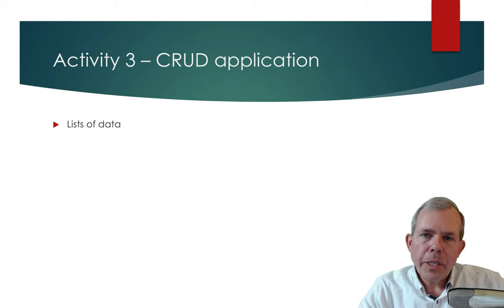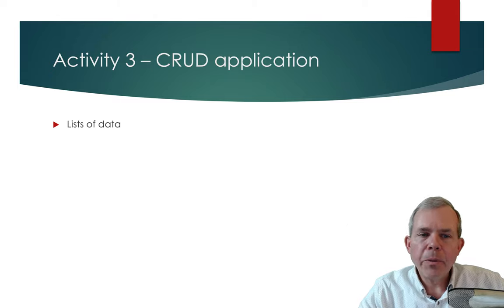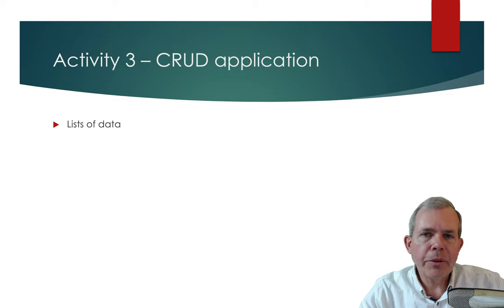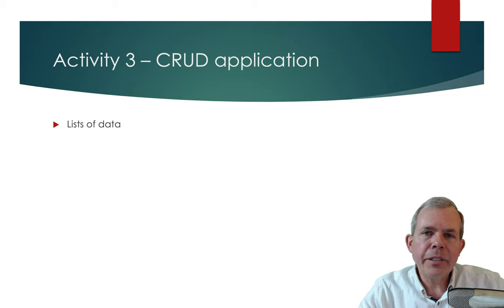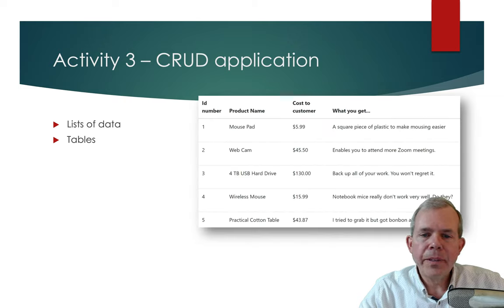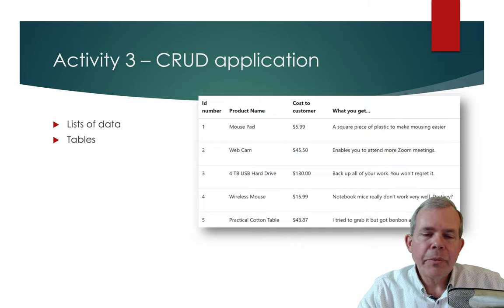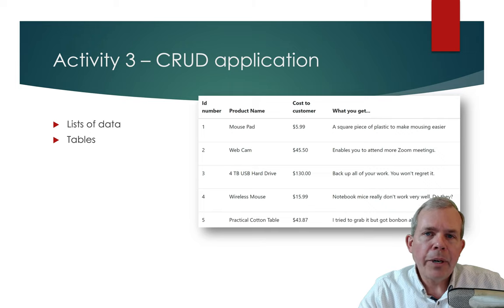In Activity 3, we're going to make a full CRUD application — CRUD stands for create, read, update, and delete — the basic database operations you can make an application do. The first thing we'll do is manage lists of data: we'll create an object called a product and display it in a table, then query that table.